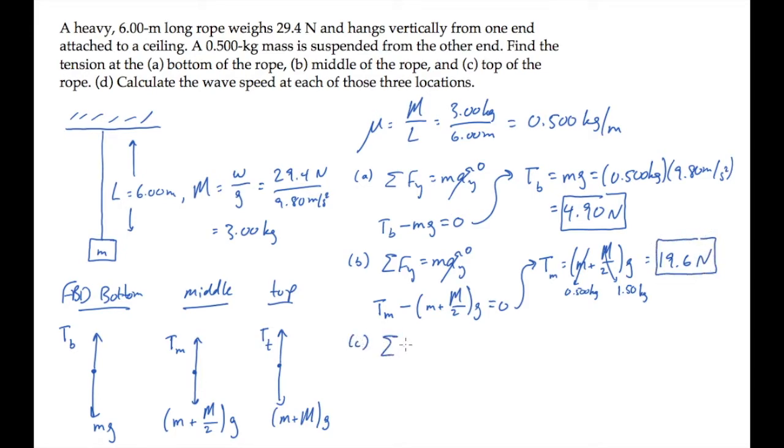At the top of the rope, we apply Newton's second law, and again see that the tension equals the weight of the underlying mass. In that case, that's the hanging mass plus the entire mass of the rope. This works out to 34.3 newtons.